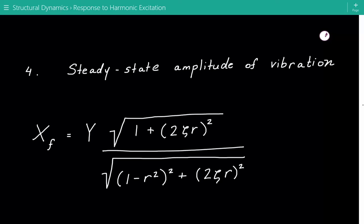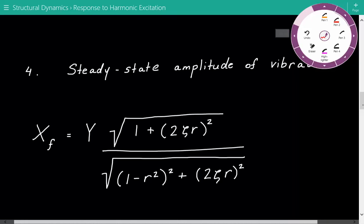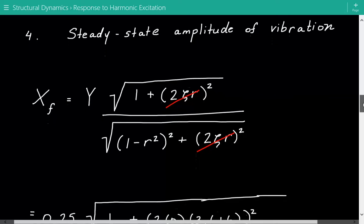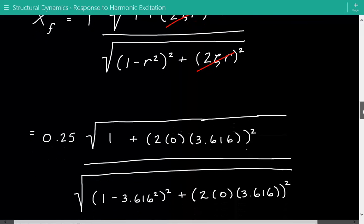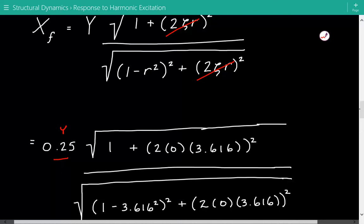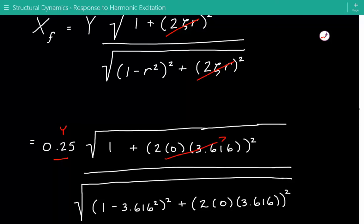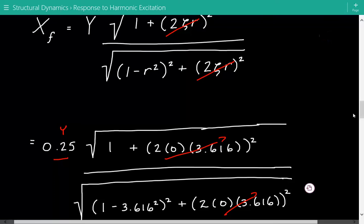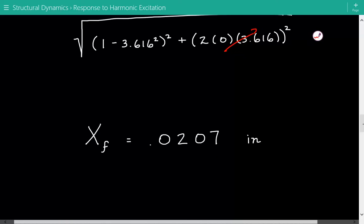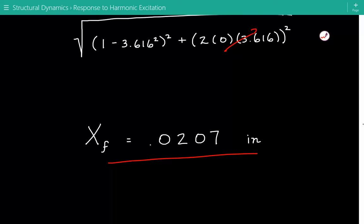The problem statement told us that damping effects were negligible, which means that zeta will be 0. So these terms go to 0, and what we're left with is that the vibration amplitude steady state is equal to 0.25 divided by the square root of 1 minus 3.616 squared, squared. This term also goes to 0. So the vibration amplitude is equal to 0.027 inches. This is the end of this example.